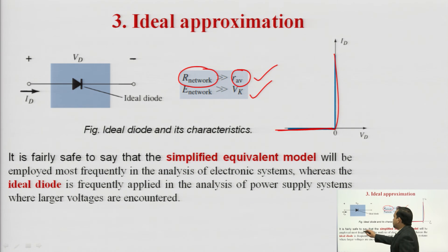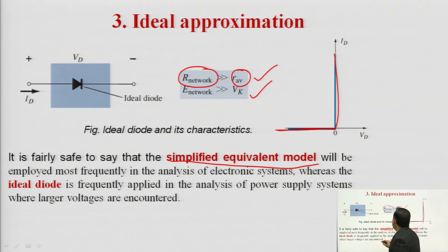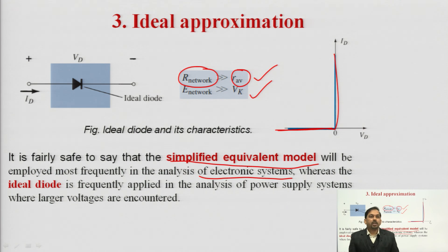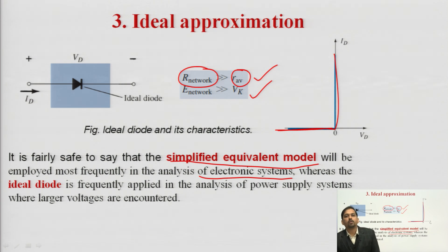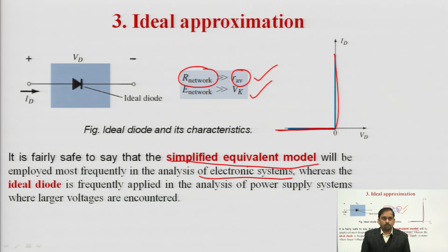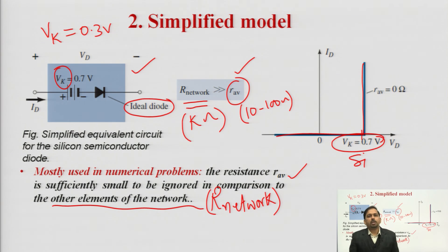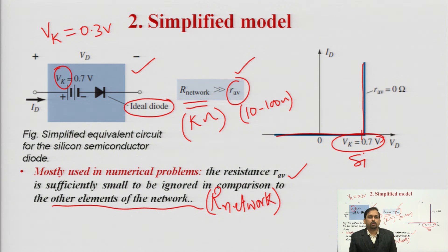It is fairly safe to say that the simplified equivalent model will be employed most frequently in the analysis of electronic systems, whereas the ideal diode is frequently applied in the analysis of power supply systems where large voltages are encountered. These three approximations can be used during the analysis of electronic circuits. We use the second approximation — the simplified model — mostly in series-parallel connections of diodes, which will be the next topic.